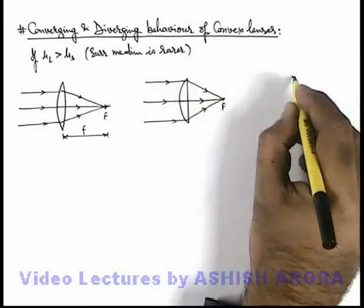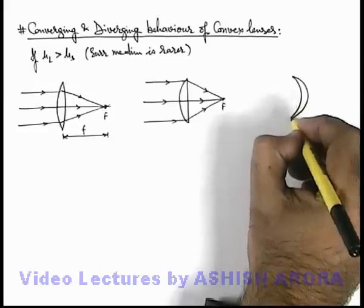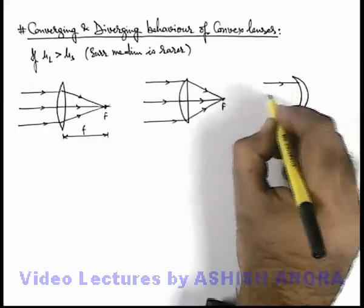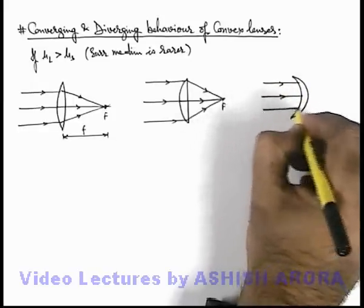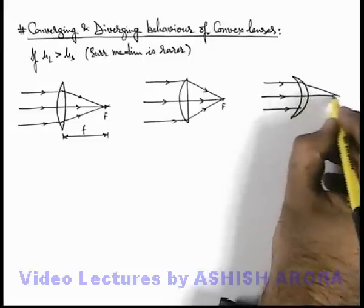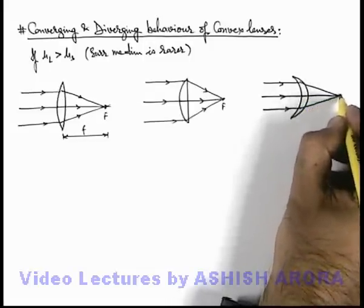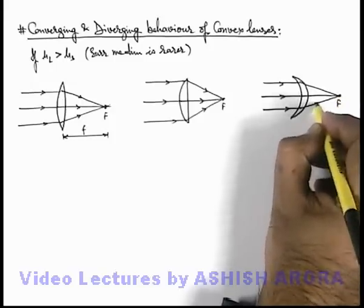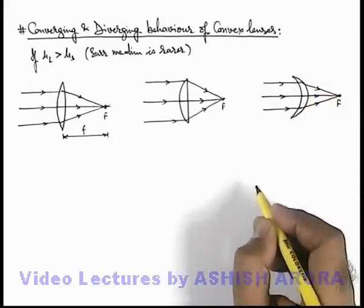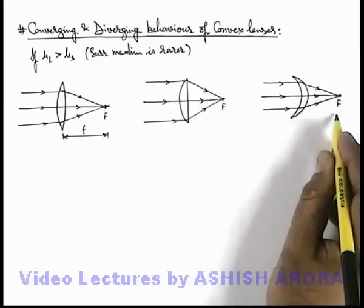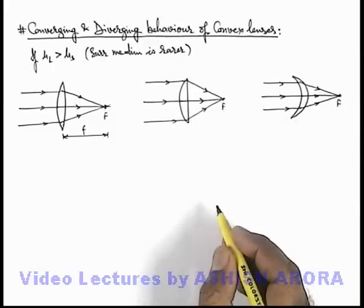And even if we consider a concavo-convex lens or a meniscus lens, then also when parallel rays are incident onto it, after refraction through the two surfaces of the lens, these rays will converge at the focal point of the lens. And all these distances of focal point from the lens we term as focal length of the lens.